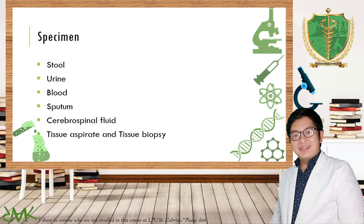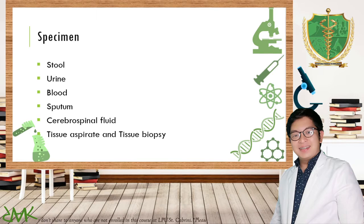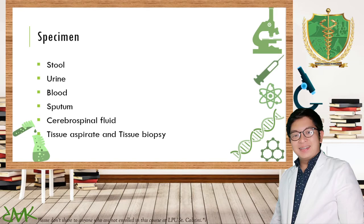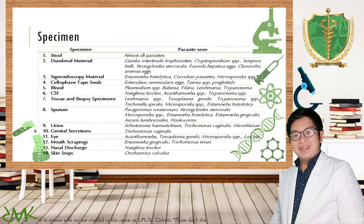Cerebrospinal fluid is also a body fluid that can demonstrate the presence of parasites, such as Acanthamoeba or Naegleria fowleri. Tissue aspirates or tissue biopsy are useful for tissue-invading parasites — for example, Trichinella spiralis, Dracunculus medinensis, and some filarial worms. Taenia solium can also be demonstrated using aspirate or tissue biopsy aside from stool samples. A summary slide of specimens and corresponding detectable parasites is available in the LMS.